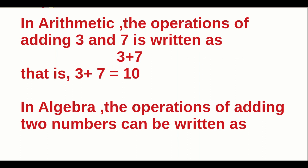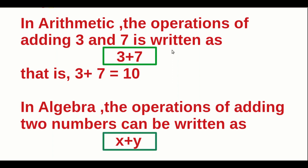But in Algebra, the operation of adding two numbers can be written as X plus Y. Look at the difference. Here in Algebra there are alphabets. In some cases, both alphabets and numbers may appear in Algebra. But in Arithmetic Operation, there should be only numbers. The first one is Arithmetic — only numbers. The second one is Algebra — because there are English alphabets.